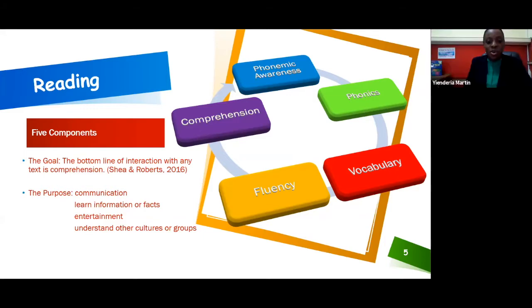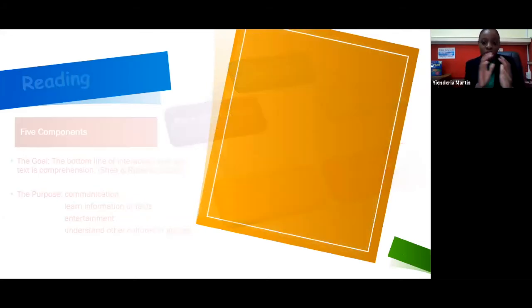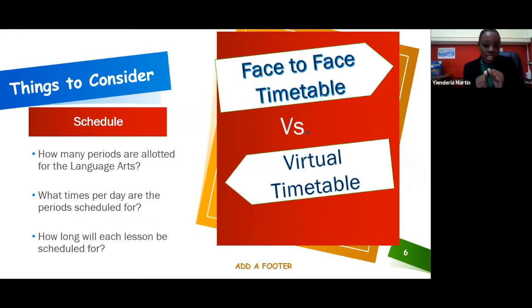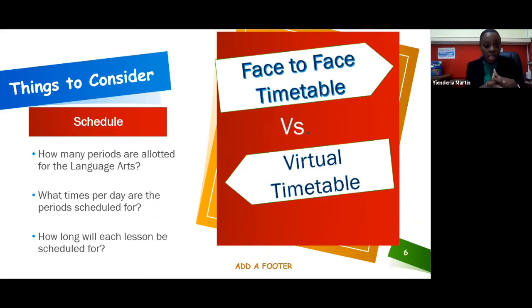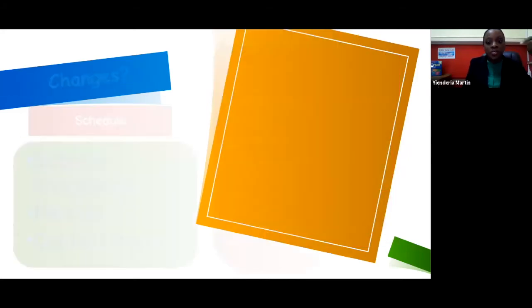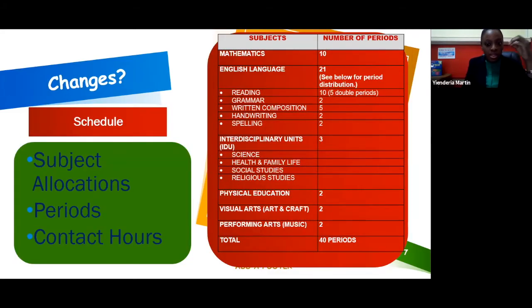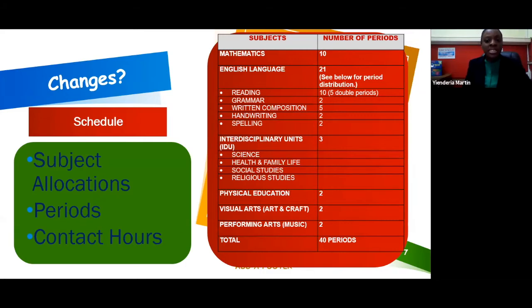Good morning, everyone. I trust that you're all well. Now, I know it's going to be difficult to transition from face-to-face to the virtual, but the first thing we have to consider is our schedule. How many periods are allotted for language arts? What times of day are we going to have these periods scheduled? How long will each session be? Let's look at the face-to-face timetable. We know that there is a 40-period week. Of those 40 periods, 21 are allocated for language arts: 10 for reading, 5 for written composition, 2 for grammar, handwriting, and spelling.